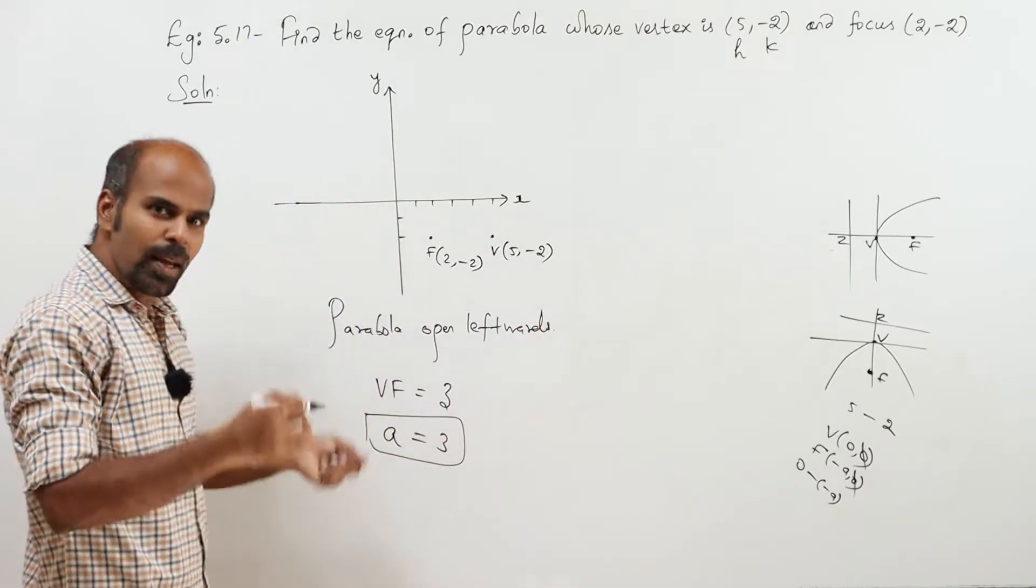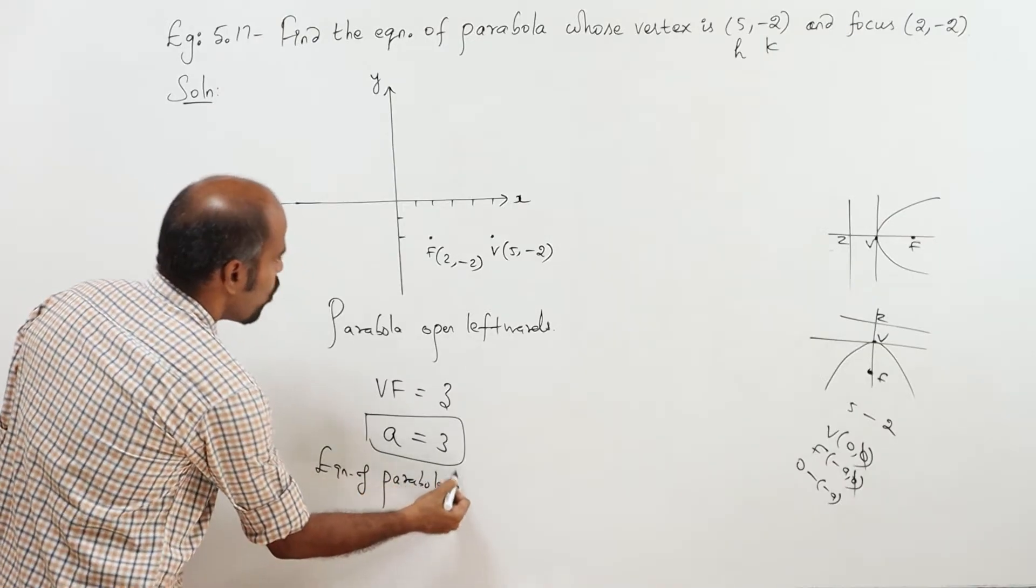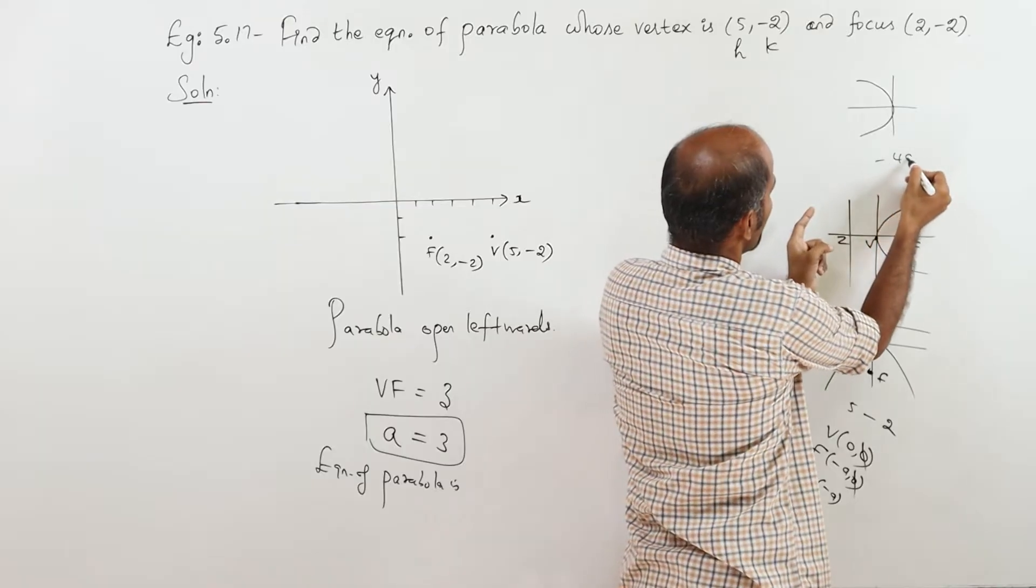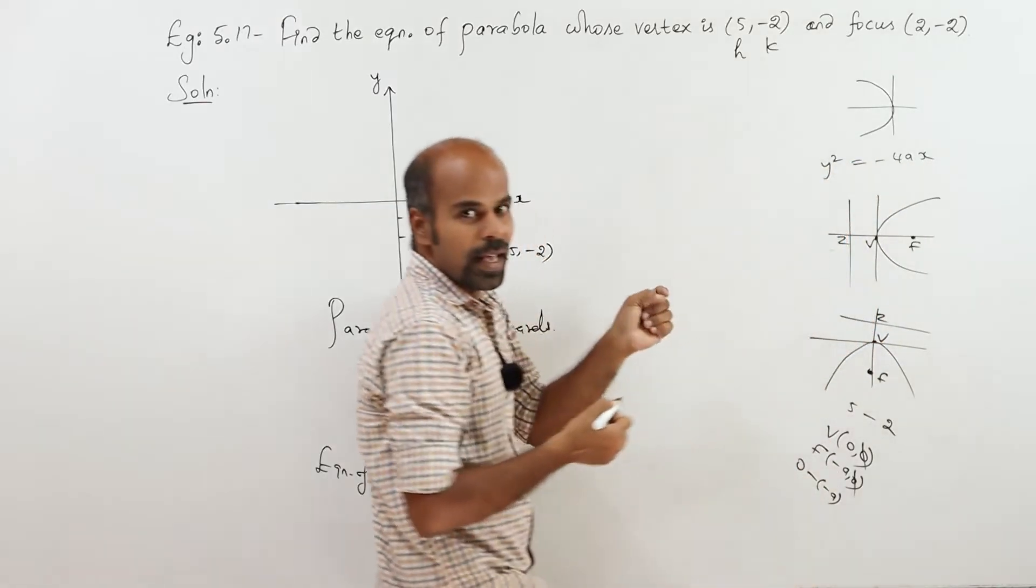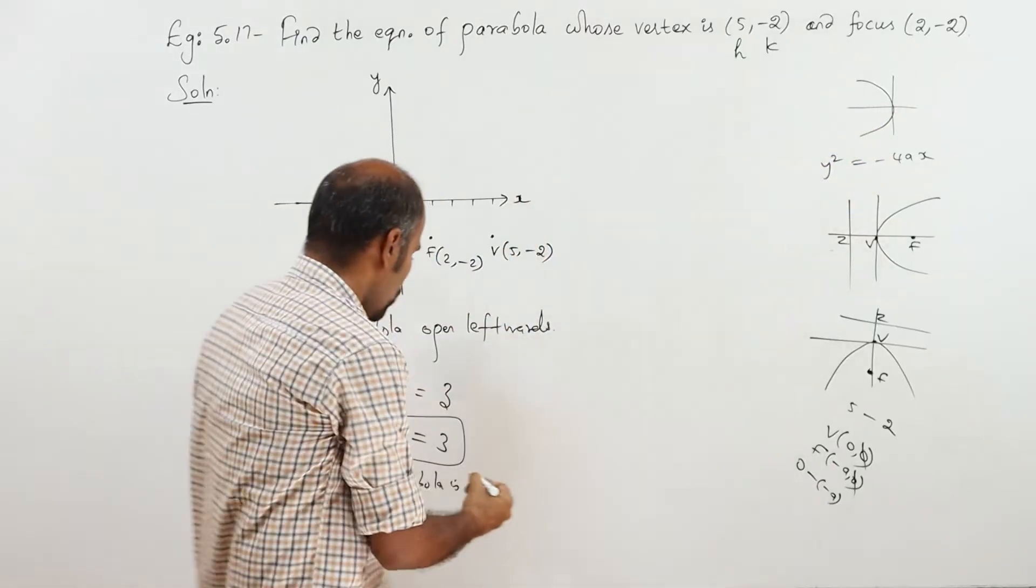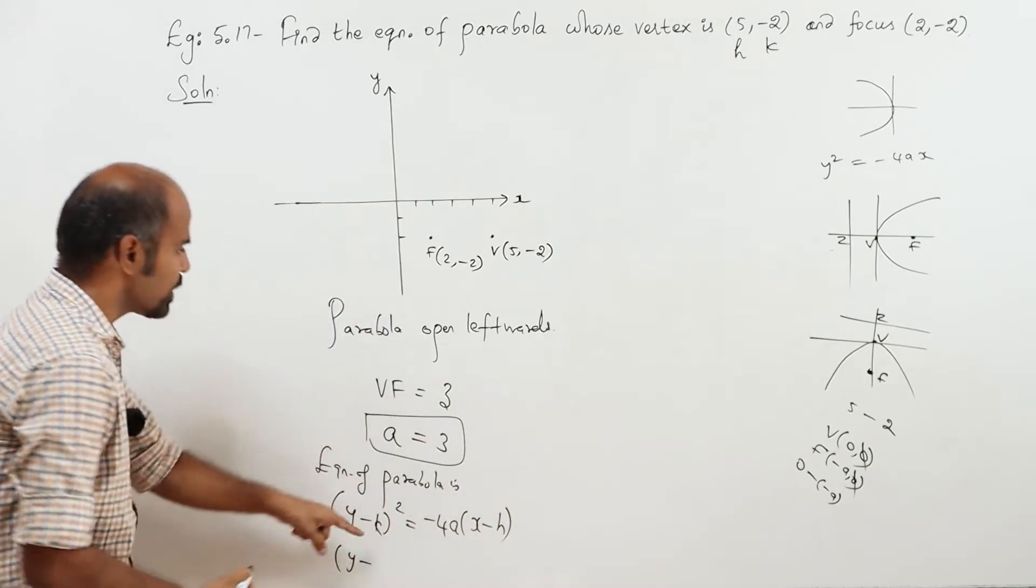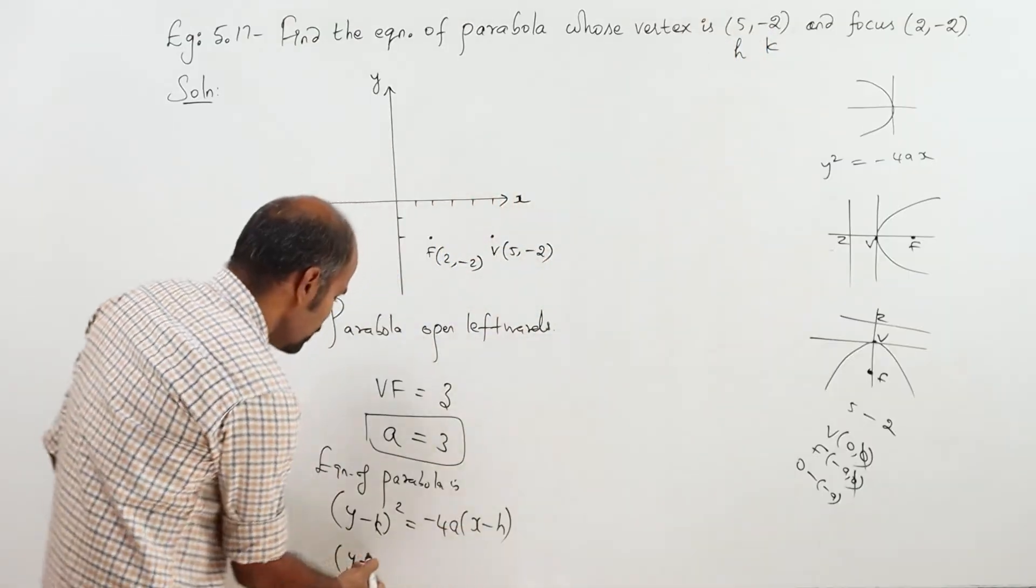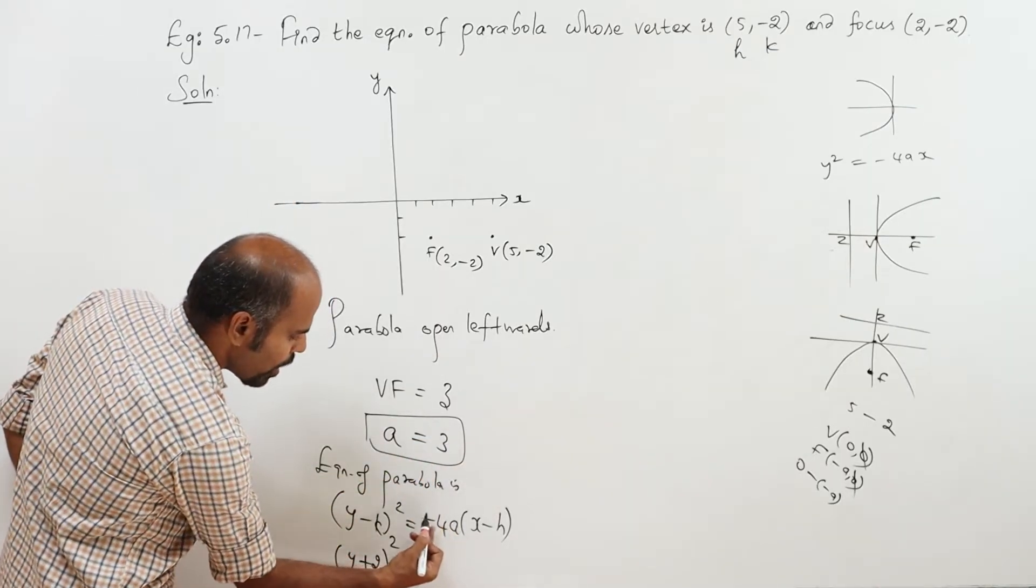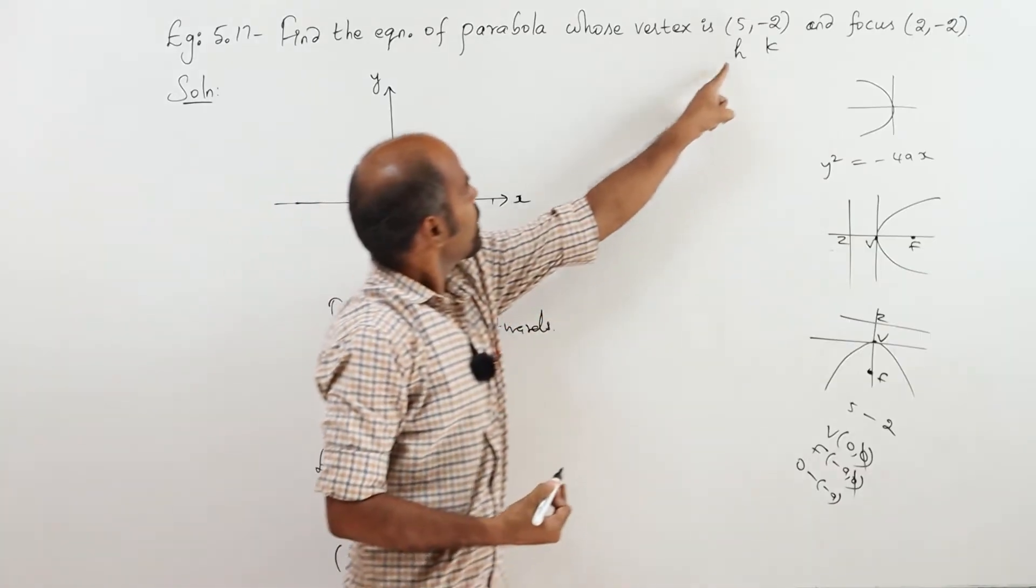Immediate equation of parabola eledeekela. Equation of parabola is open left words. Open left word means the parabola curves to the left. Y minus K whole square equal to minus 4A times X minus H. Y minus K, K is minus 2 so plus 2 whole square equal to A is 3, minus 4 into 3 is minus 12 into X minus H, H is 5.